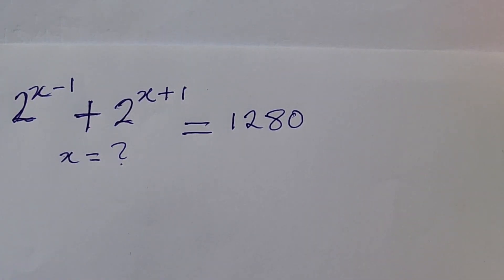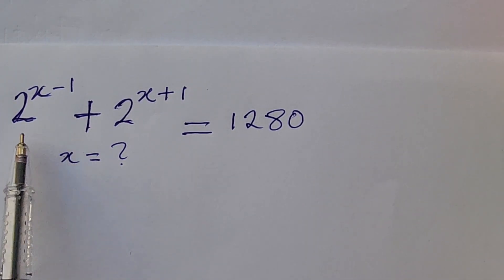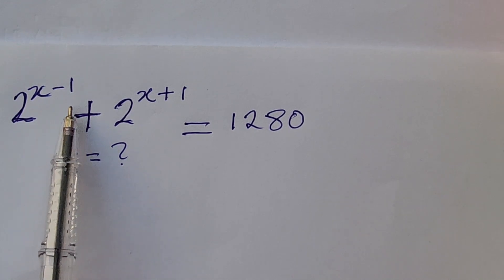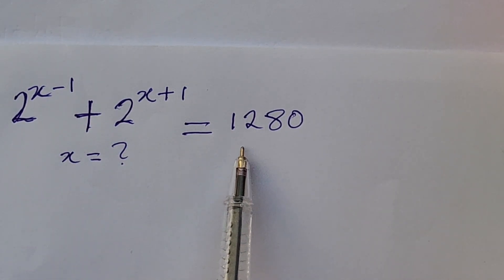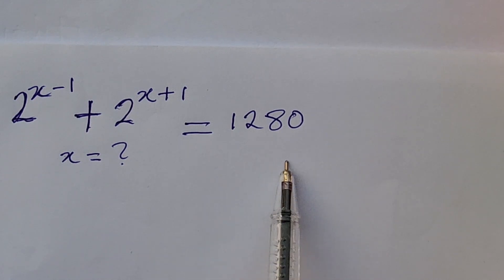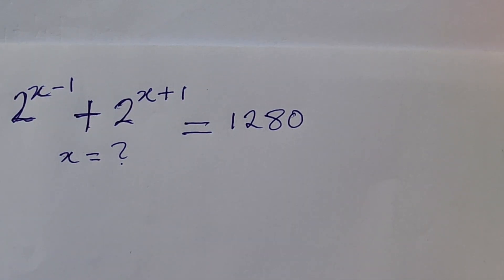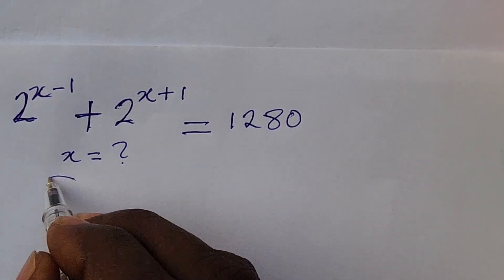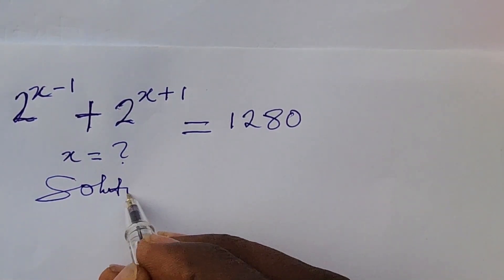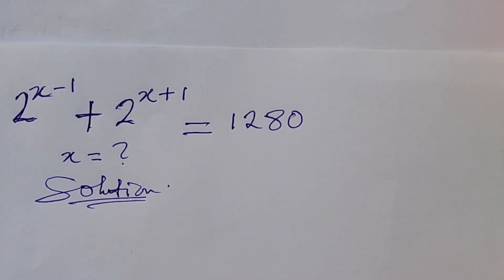Hi everyone, we have a very simple exponential challenge before us today. The question reads: 2 to the power of x minus 1, plus 2 to the power of x plus 1, equal to 1280. What would be the possible value of x? This is Online Math TV where we learn mathematics, so without much waste of time let's go straight to today's challenge.